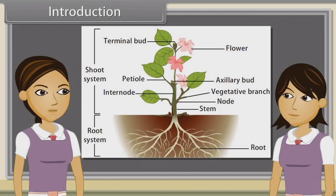When we observe a plant, we see that every plant has roots, stem and leaves. Plants also have flowers and fruits.